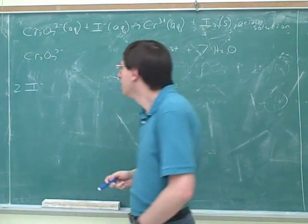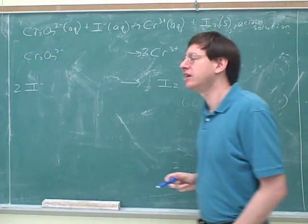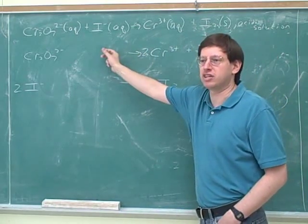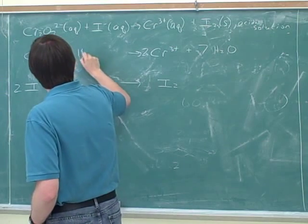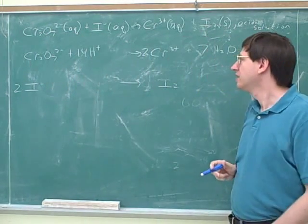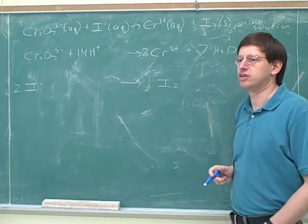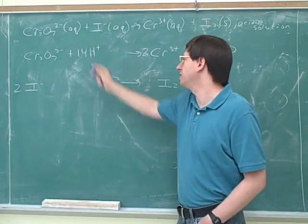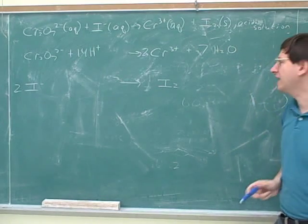So here we're going to use H⁺. And we need the H-pluses on the left, just like you were saying. And how many H-pluses do we need? 14 H-pluses. Very good. You can see why we have to do these in order. We wouldn't know how many H-pluses we needed until we knew how many waters we had.